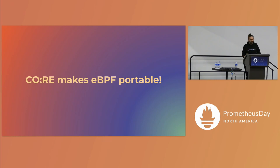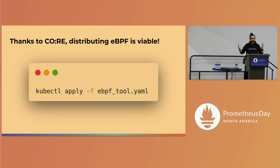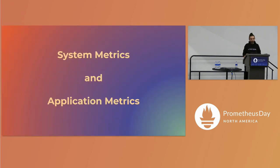Because of CO-RE portability, we can have a manifest or container, do a kubectl apply, and just run this eBPF program in our cluster to collect any cluster-related metrics or observability data we need. One thing to mention: to run these programs you need access to the kernel, so these are privileged containers or pods. You need to make sure you know what you're loading into your cluster.